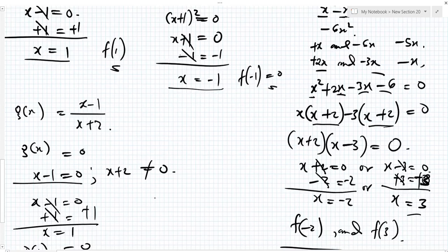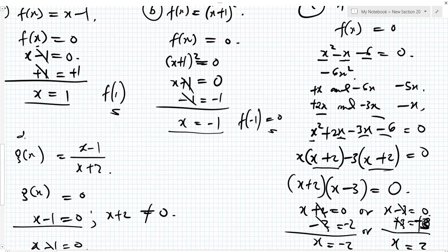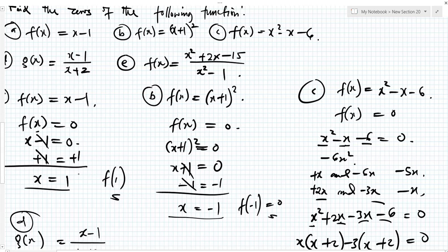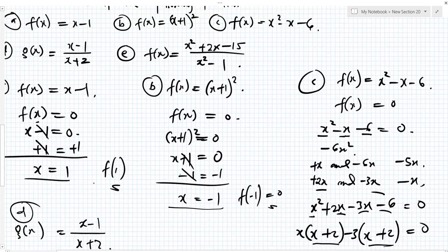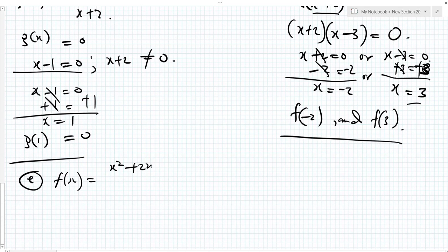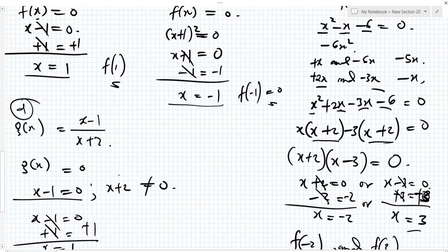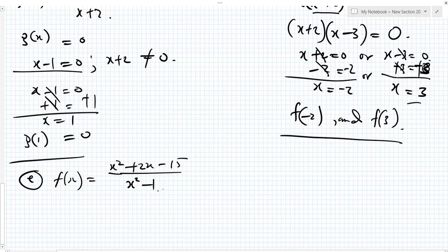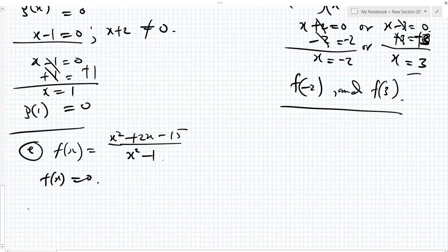Now question d. You have f of x equal to x squared plus 2x minus 15, all over x squared minus 1. The zeros of this function are at a point where f of x is equal to 0 — the value of x where x squared plus 2x minus 15 equals 0, while x squared minus 1 is not equal to 0.